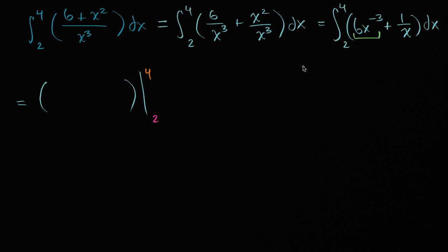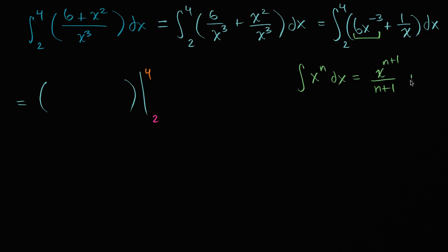We know that the integral of x to the n dx gives an antiderivative of x to the n plus one over n plus one. If we were taking an indefinite integral there would be a plus C, but since the C cancels out when evaluating both bounds of integration, we don't worry about it for definite integrals.